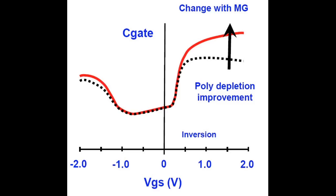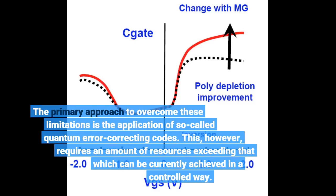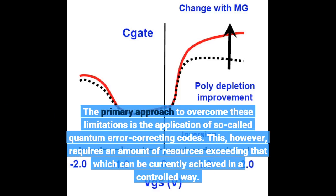The primary approach to overcome these limitations is the application of so-called quantum error correcting codes. This, however, requires an amount of resources exceeding that which can be currently achieved in a controlled way.